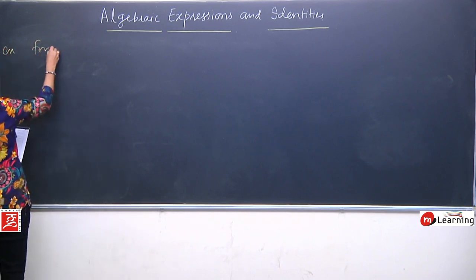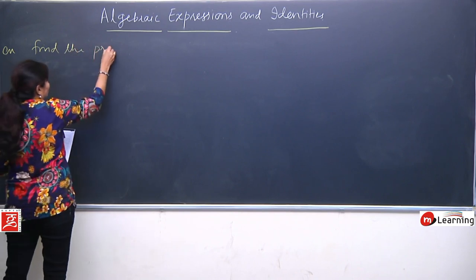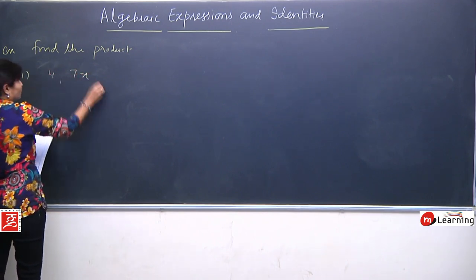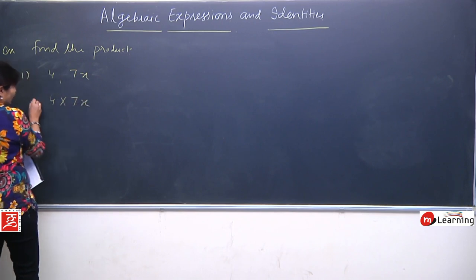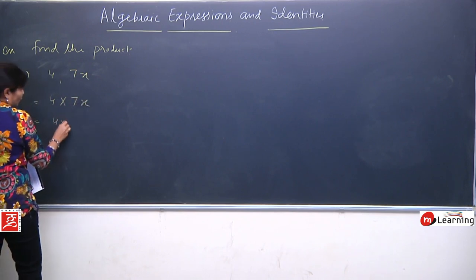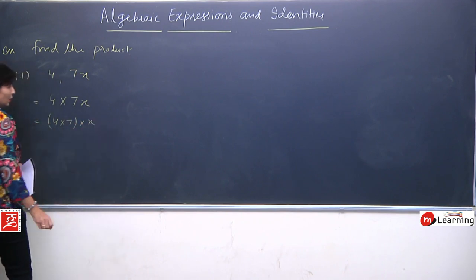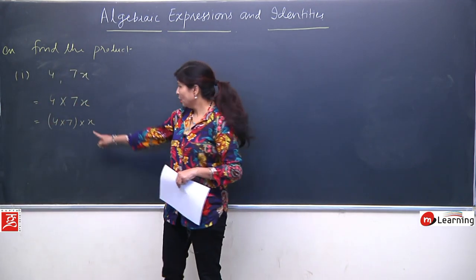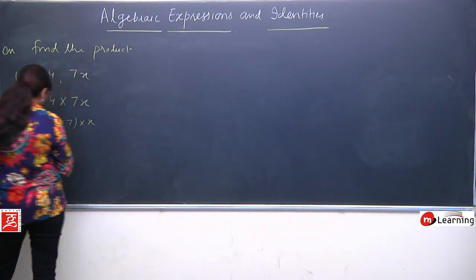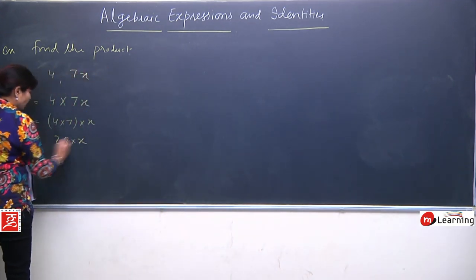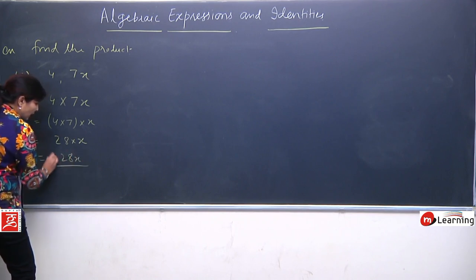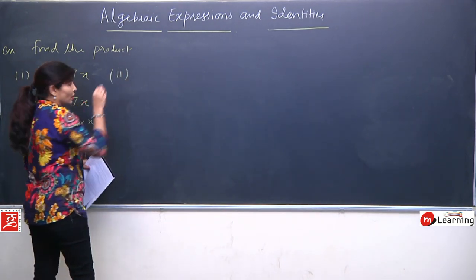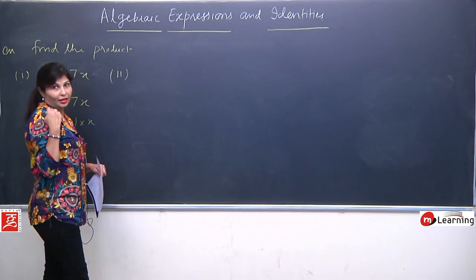First example: find the product of 4 and 7x. First step: write 4 multiply by 7x. Second step: number will be multiplied by number — coefficient multiplied by coefficient. 4 into 7 gives 28 into x. Your final answer will be 28x — there is no need to put the multiplication sign.